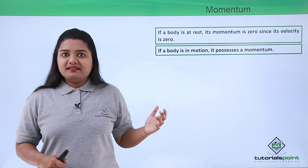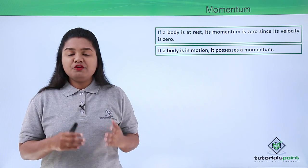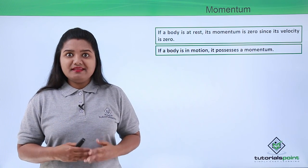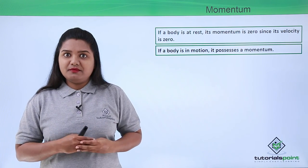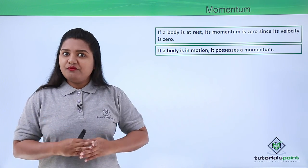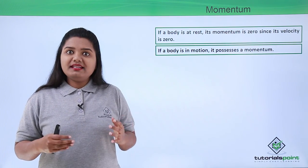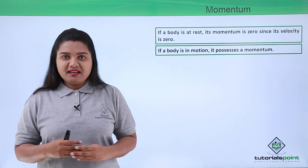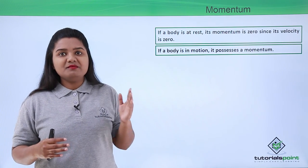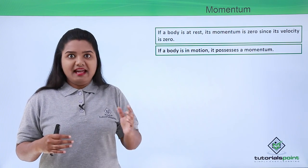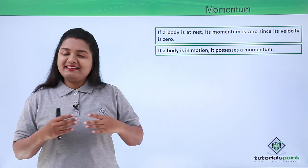In this video we have learnt that the momentum of a body is the amount of motion contained in a body. It is a relationship between the mass of a moving body and the velocity with which it moves. The expression is p equals m into v, the unit is kg meters per second, and the momentum of a body at rest is zero while a moving body has some definite momentum. I hope this video was helpful. Thanks for watching.